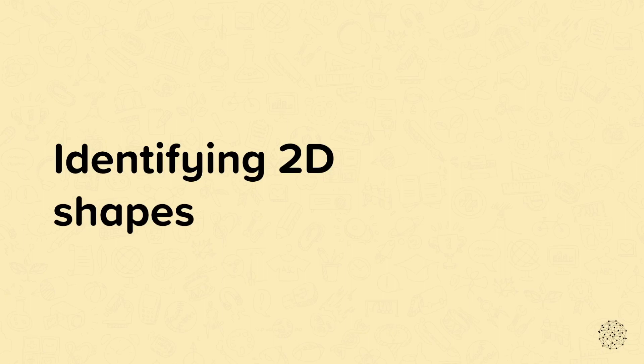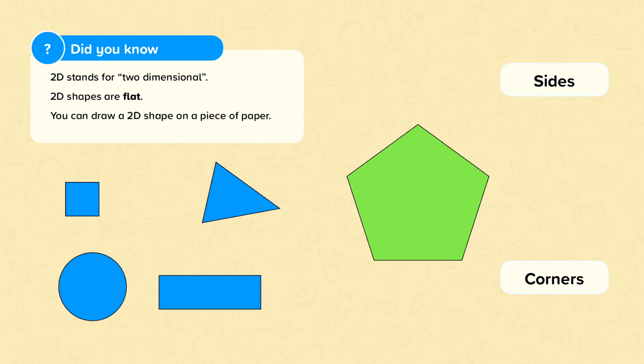Identifying 2D shapes. Did you know 2D stands for two-dimensional? 2D shapes are flat and you can draw a 2D shape on a piece of paper. So these are all examples of 2D shapes because I could draw all of these on a piece of paper.